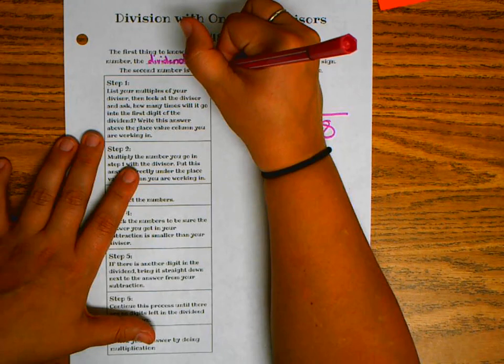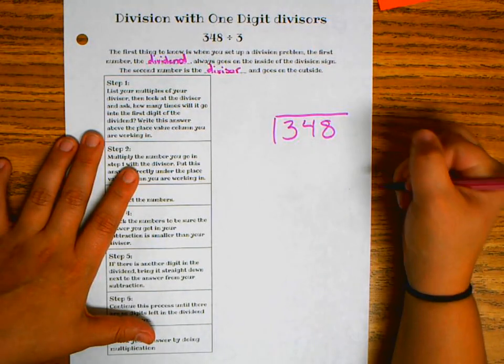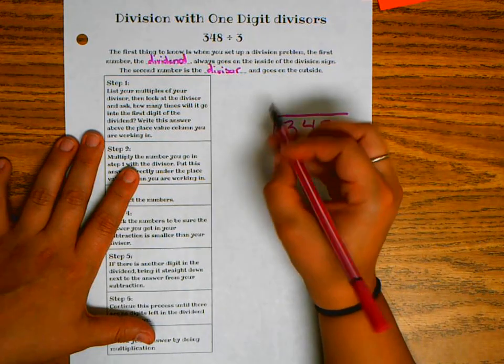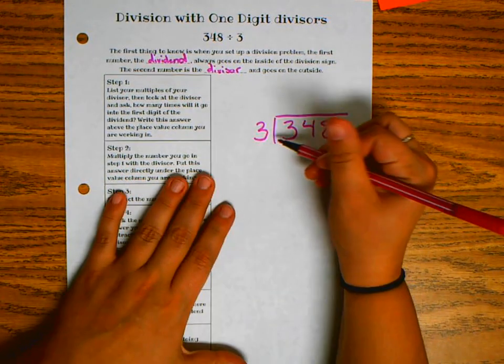The second number is the divisor. So that second number is the divisor, and it goes on the outside. So the divisor is the number that you are dividing by.